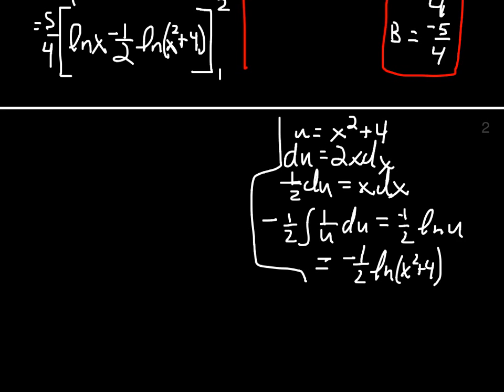So let's plug the 2 in. We'll get 5 fourths, then we have the natural log of 2 minus half of the natural log of 8. Plug the 1 in, natural log of 1 minus half of the natural log of 5.